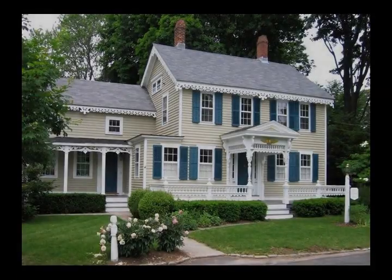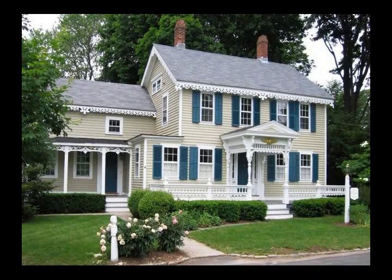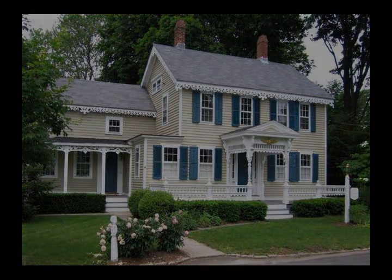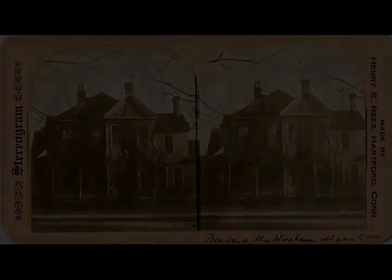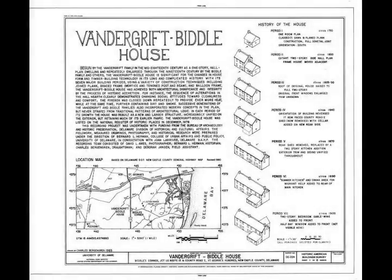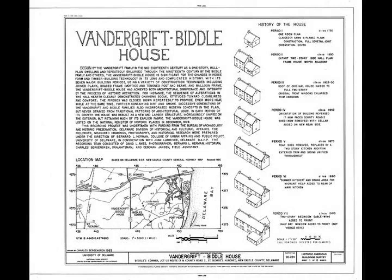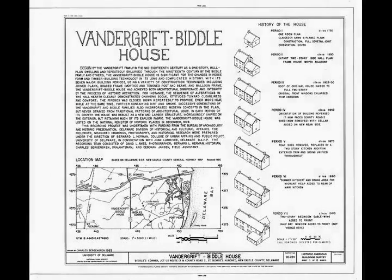Most commonly, a household is a family unit of some kind, although households may also be other social groups, such as roommates or, in a rooming house, unconnected individuals. Some houses only have a dwelling space for one family or similar-sized group. Larger houses called townhouses or row houses may contain numerous family dwellings in the same structure. A house may be accompanied by outbuildings, such as a garage for vehicles or a shed for gardening equipment and tools.